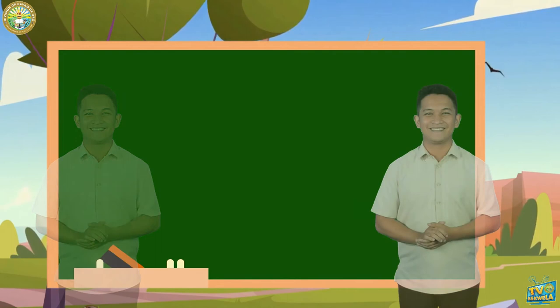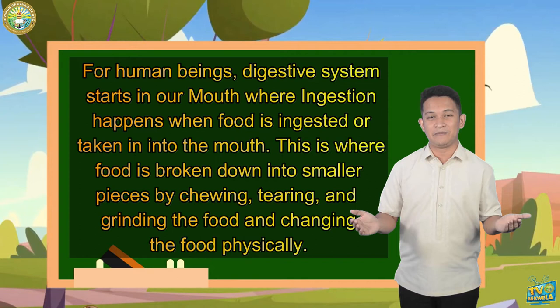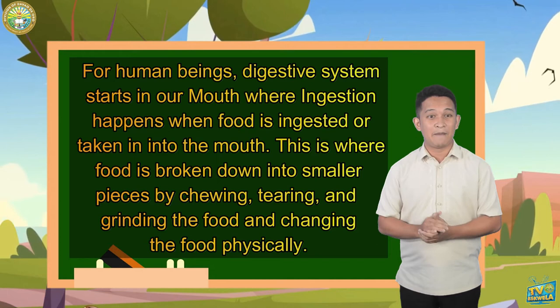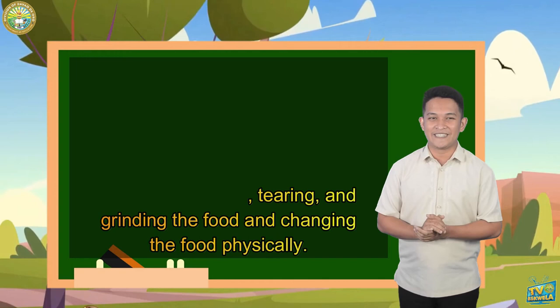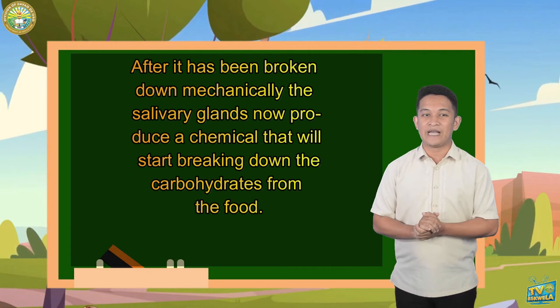For human beings, the digestive system starts in the mouth where ingestion happens — when food is ingested or taken into the mouth. This is where food is broken down into smaller pieces by chewing, tearing, and grinding, changing the food physically. After it has been broken down mechanically, the salivary glands produce a chemical that starts breaking down the carbohydrates from the food.